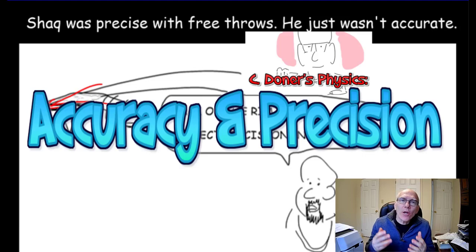Today we're going to take a look at accuracy and precision, as well as their counterparts, systematic error and random uncertainty.